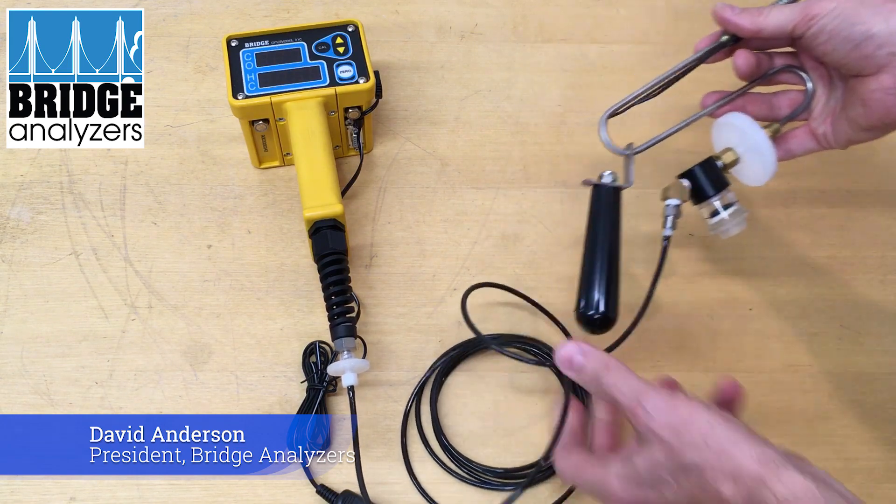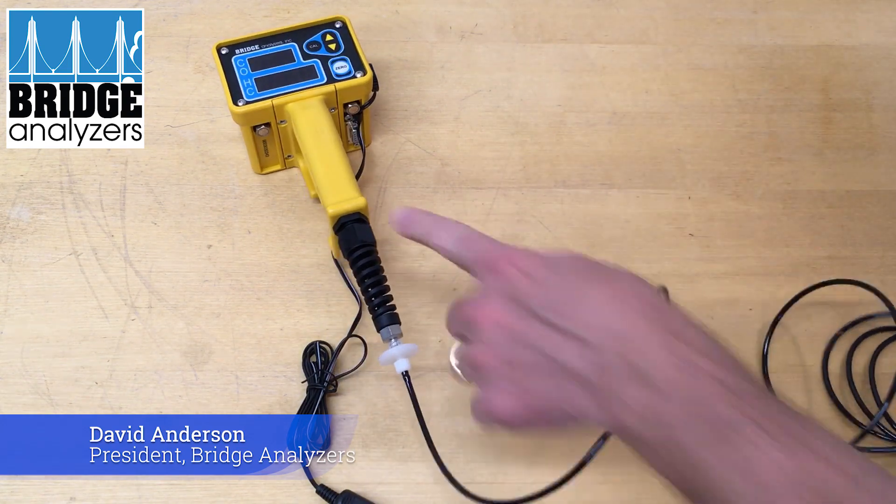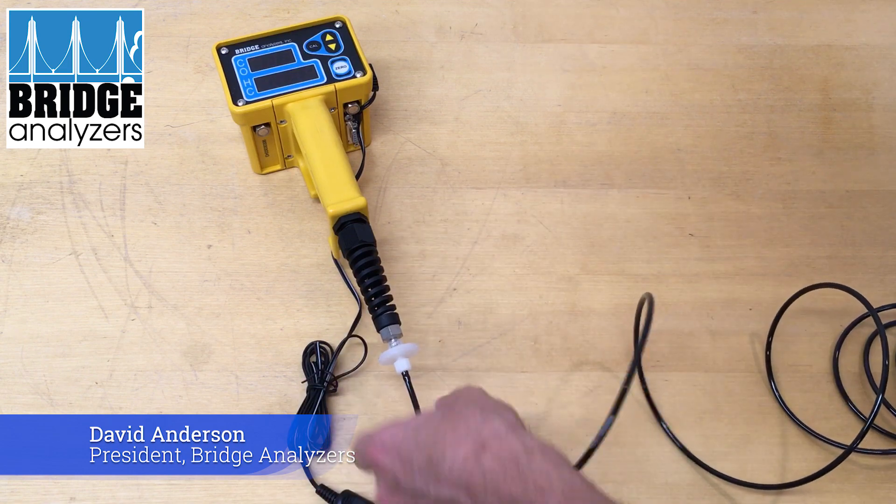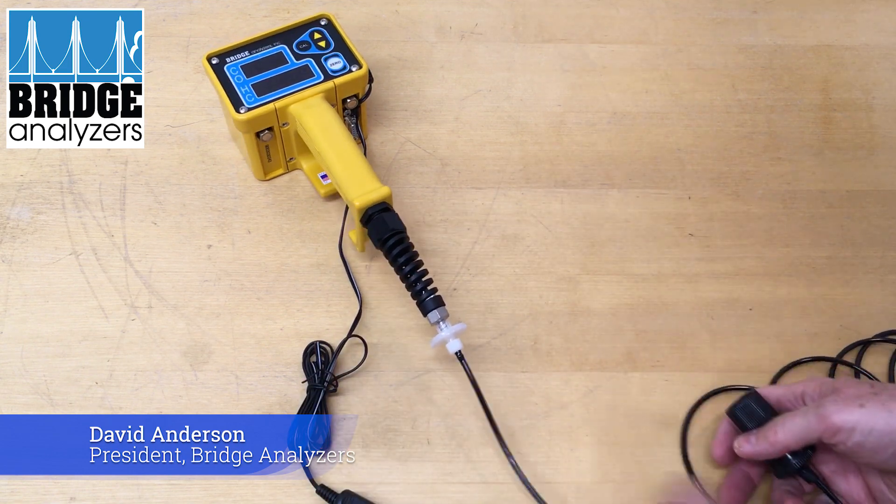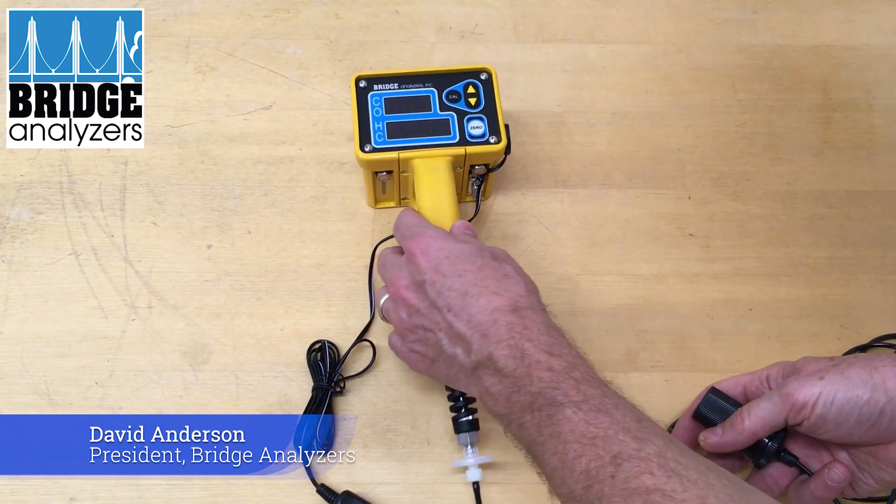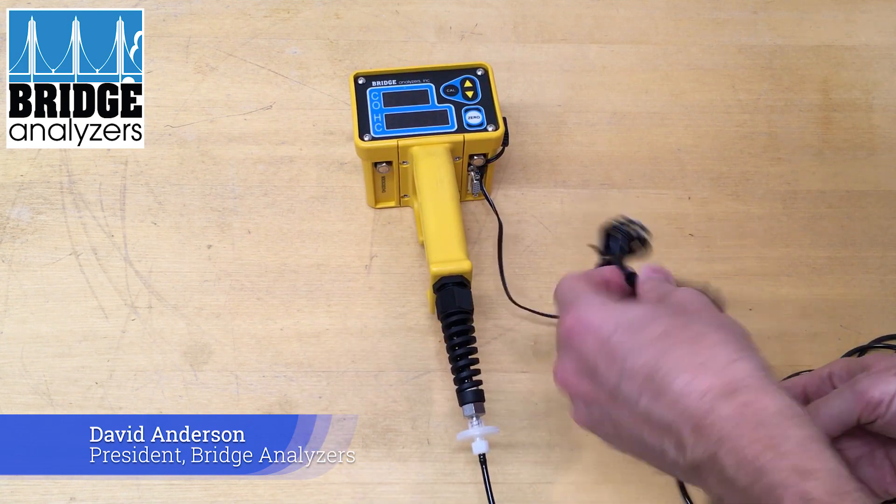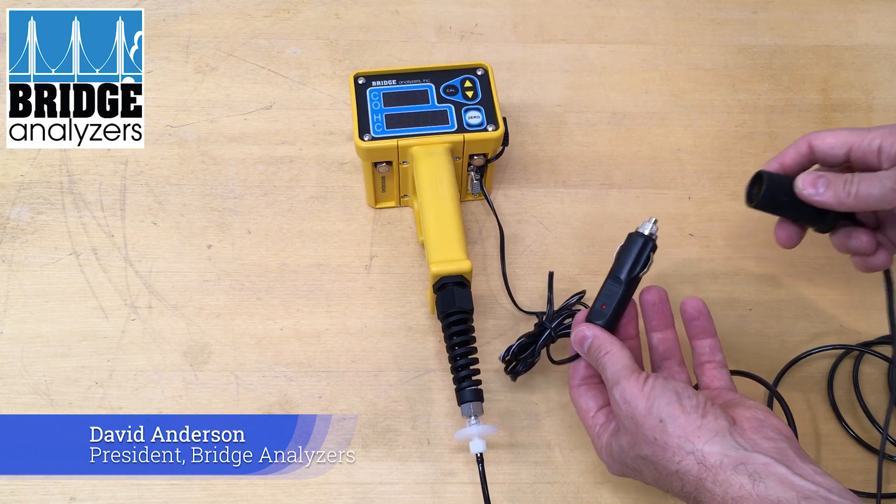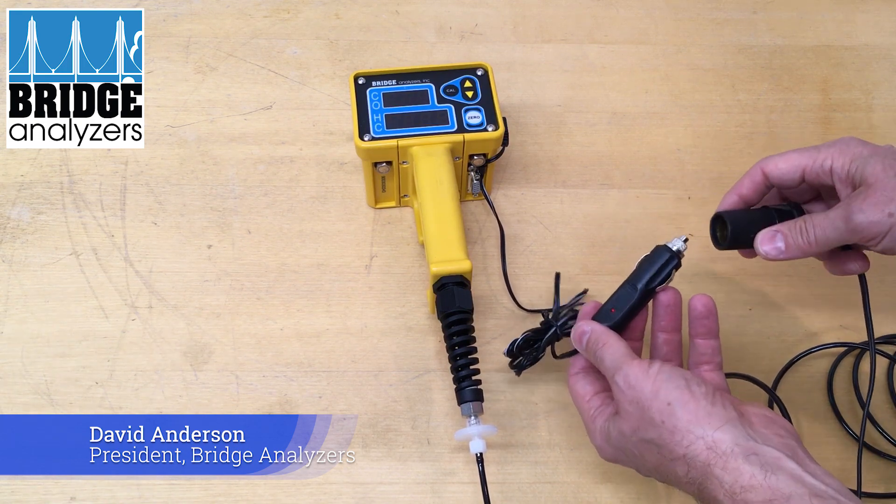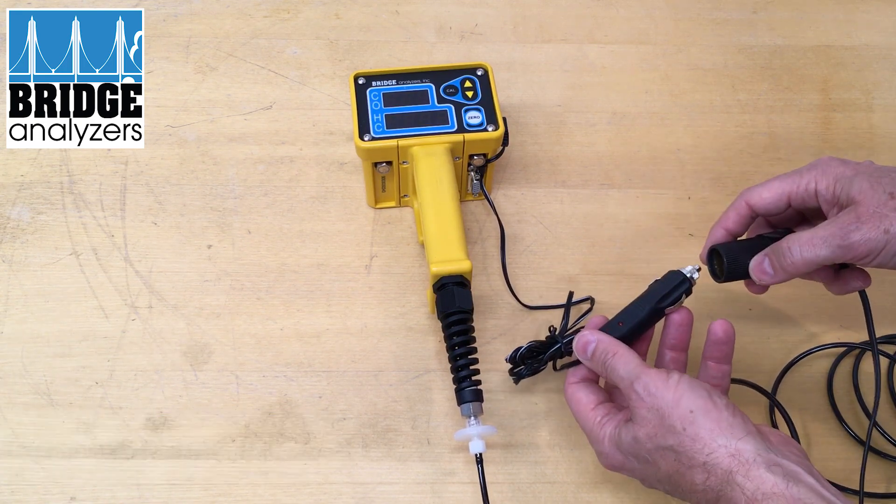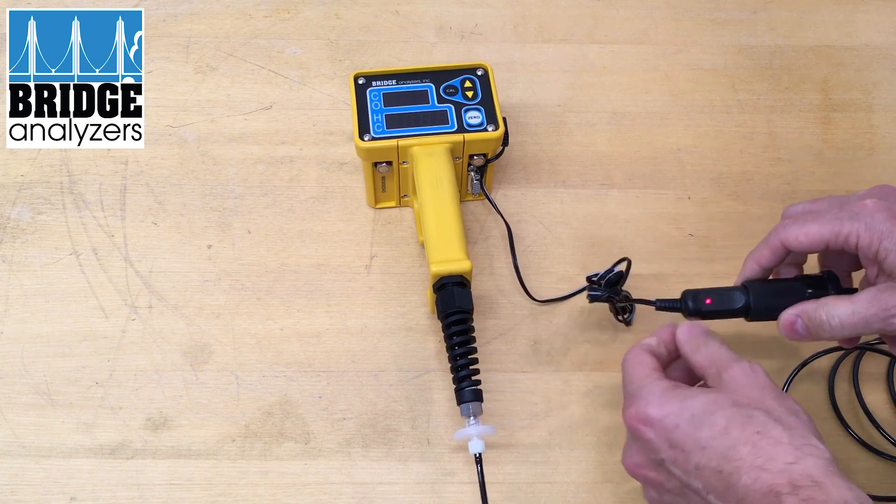So to use the analyzer you connect the probe and the tubing, and then in this case this is a two gas analyzer which does not have battery power. You can get this two gas analyzer with a battery pack that is rechargeable.